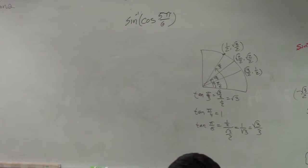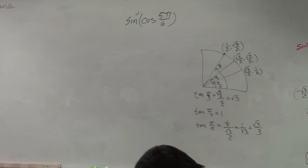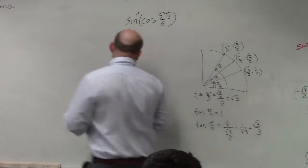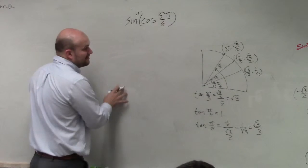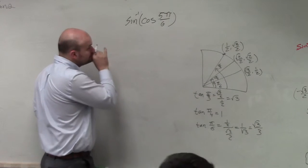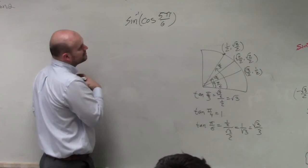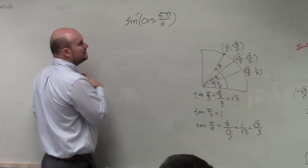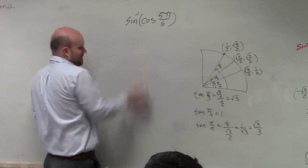All right, so that's the final answer, ladies and gentlemen: cosine of 5π/6. The main thing we need to understand with this — cosine of 5, 5, 6.